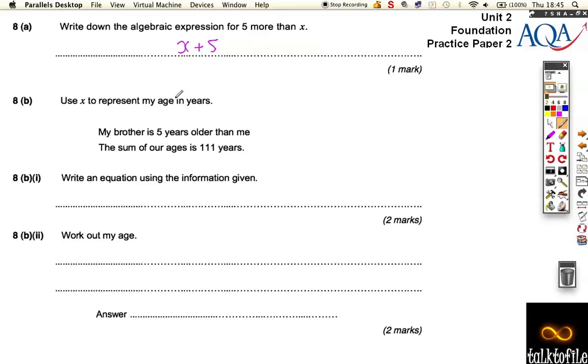It says, use x to represent my age in years. My brother is 5 years older than me. So, if my age is x and my brother is 5 years older, it's x plus 5, and the total of these things is equal to 111.